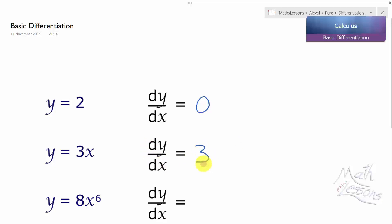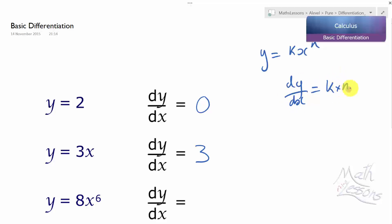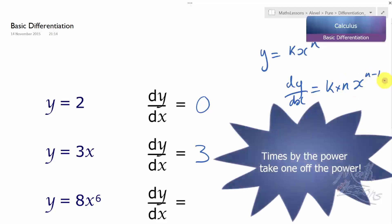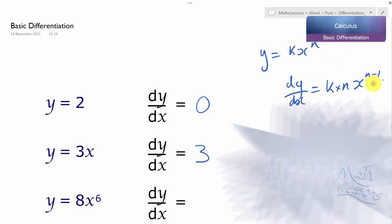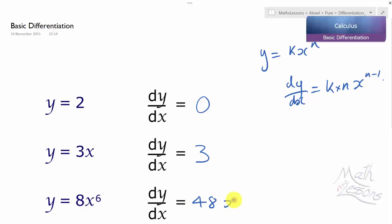Now we're going to do y equals 8x to the 6. For this we use the formula: for y equals kx to the n, then dy/dx equals k times n times x to the n minus 1. An easy way to remember this is we multiply by the power. So times by the power: 6 times 8 is 48, then take one off the power: 6 minus 1 is 5. The derivative of 8x to the 6 is 48x to the 5.